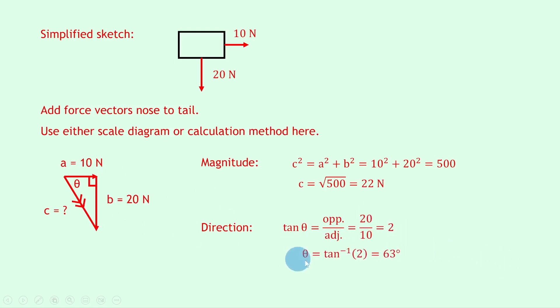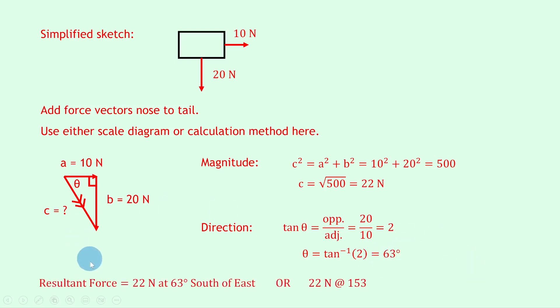We find theta by doing inverse tan of 2, which gives 63 degrees. Now we need to write down our final statement with the angle as either a compass point or a bearing. The resultant force is 22 newtons at 63 degrees south of east, or 22 newtons at a bearing of 153.